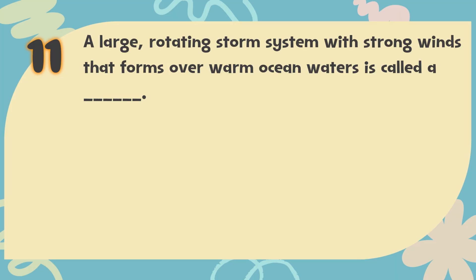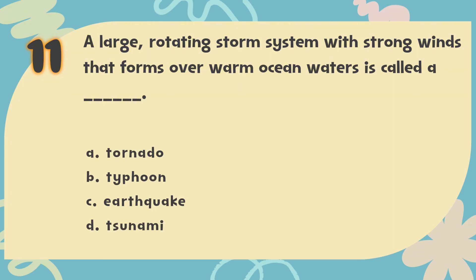Number 11: A large, rotating storm system with strong winds that forms over warm ocean waters is called a blank. The choices are: A. Tornado, B. Typhoon, C. Earthquake, D. Tsunami.